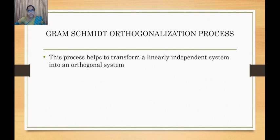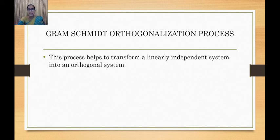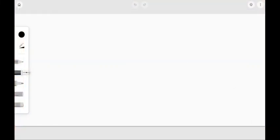In this lecture we are going to introduce the Gram-Schmidt orthogonalization process. The main concept behind this is that the process helps us to transform a linearly independent set into an orthogonal system. I'm not going to go through the proof in detail as it is not mentioned in your textbook, but you can refer to any other textbook — for example, the textbook by Limaye contains the proof.